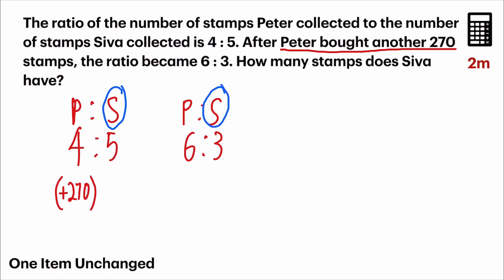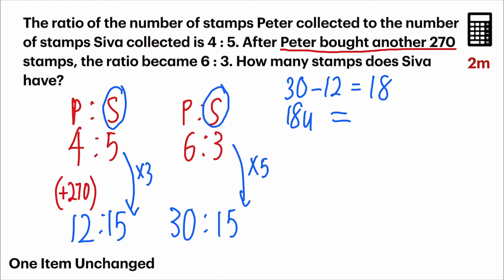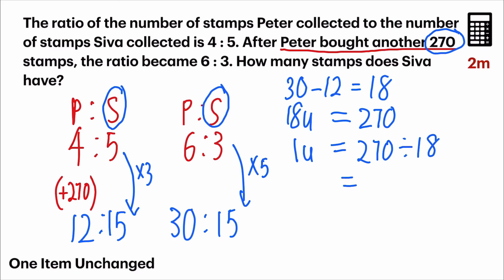For Siva we have 5 and 3, and the common multiple is 15. For the left-hand side, multiply by 3: 4 times 3 gives 12. For the right-hand side, multiply by 5: 6 times 5 gives 30. Now observe Peter's ratio: it was 12 before and became 30, because he bought another 270 stamps. So 30 minus 12 gives 18 units. We relate this to the question: 18 units equals 270 stamps. Finding 1 unit: 270 divided by 18 gives 15.